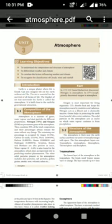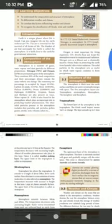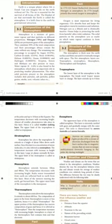The structure of the atmosphere — the atmosphere is thick near the earth's surface and thins out until it eventually merges with space. There are five atmospheric layers: troposphere, stratosphere, mesosphere, thermosphere, and exosphere. Apart from these, there is one more sphere — the magnetosphere.